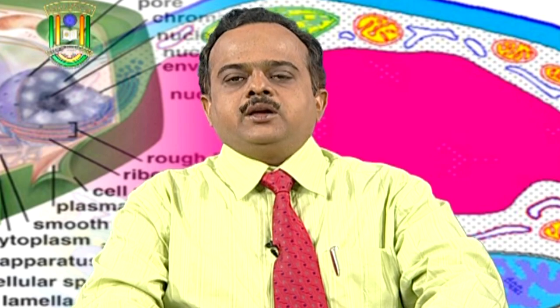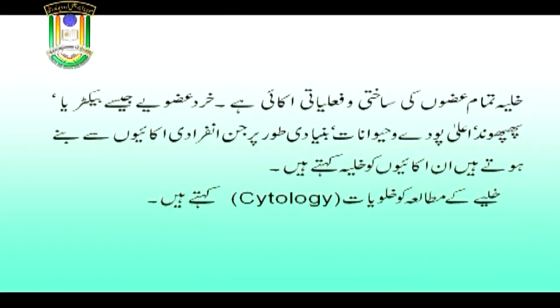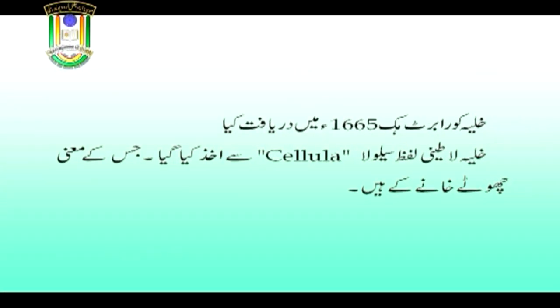سبق شروع کرنے سے پہلے آپ کو بتا دیں کہ خلیہ کیا ہے۔ خلیہ تمام عضویوں کی ساختی اور فعلیاتی اکائی ہے۔ خرد عضویے جیسے بیکٹیریا، فنجائی، آلجی، پودے اور حیوانات بنیادی طور پر جن انفرادی اکائیوں سے بنے ہوتے ہیں ان کو خلیہ کہتے ہیں۔ خلیہ کے مطالعہ کو خلویات یا سائٹالوجی کہتے ہیں۔ سب سے پہلے خلیہ کو رابرٹ ہک نے 1665 میں دریافت کیا۔ لفظ خلیہ لاتینی لفظ سیلولا سے اخذ کیا گیا جس کے معنی خانے کے ہیں۔